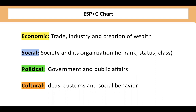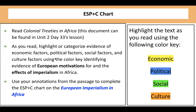So why don't we actually look at an example? We're going to use a document from Unit 2, Day 33. I have included both an annotated and an unannotated version in this video that you may wish to pause and read. What we're going to do is read this document, "Colonial Treaties in Africa," and then, as you read, you're going to highlight or categorize evidence that helps us figure out economic, political, social, and cultural factors, using our color key code. We're going to only use one document and really try to look at how things fit into our chart — but first we need to read, then go into our chart.